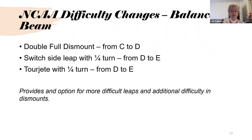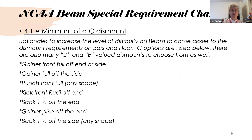Balance beam new difficulty values for college: the double full dismount went from a C to a D; the switch side leap with a quarter turn went from a D to an E; and a chojete with a quarter turn went from a D to an E. These are all in the new version of the modifications. The rationale was to provide options for more difficult leaps and additional difficulty in dismounts. The new special requirement: you are now required to have a minimum of a C dismount on balance beam. The rationale was to increase the level of difficulty on beam to come closer to the dismount requirements on bars and floor. Some C options are listed and there are also many D and E value dismounts to choose from.